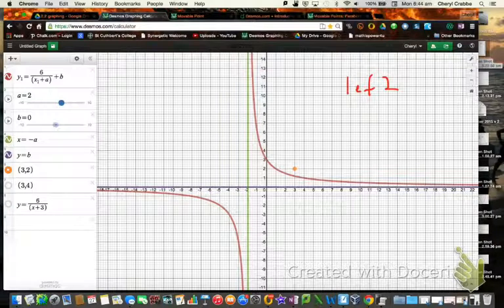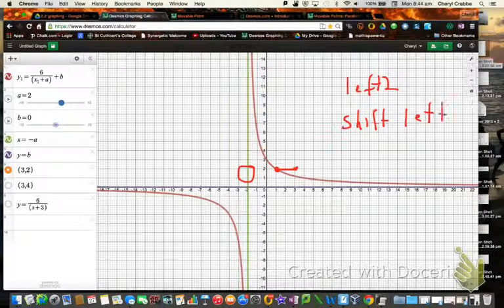So this point that we were at, which was on orange here, this point here, has now shifted and is now over here. So that point has shifted to the left, too. But not only has the graph itself shifted to the left, too, but you'll notice that the asymptote has also shifted to the left, too.